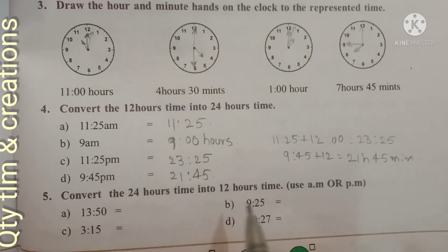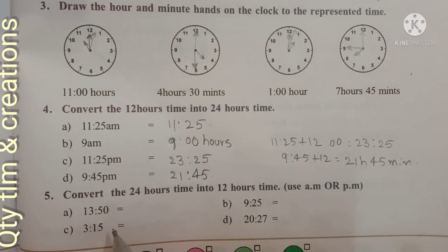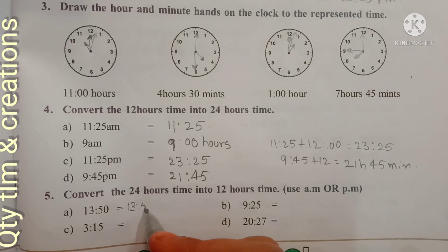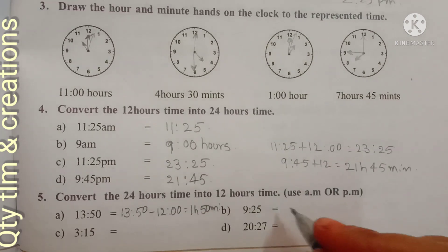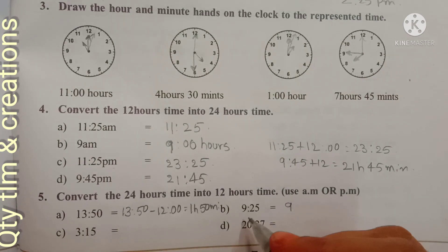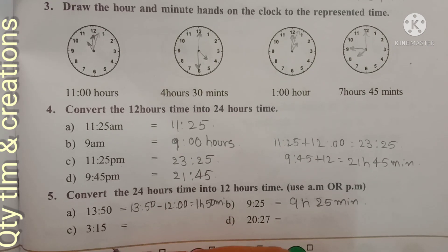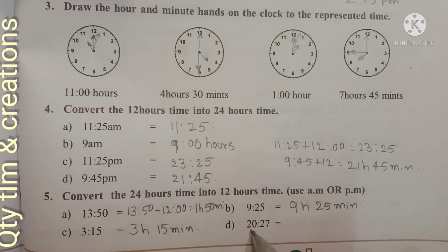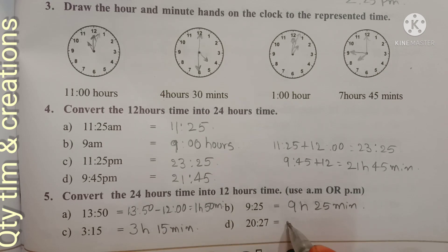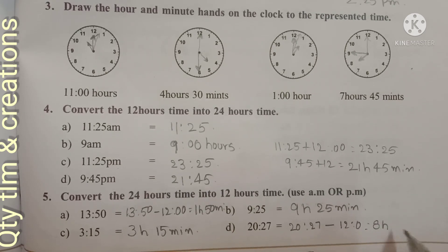Next: convert 24-hour time into 12-hour time. For 13:50, we subtract 12 hours since it is a PM value: 13:50 minus 12 equals 1 hour 50 minutes PM. For 9:25, this is not a PM value so we write it as-is: 9 hours 25 minutes. For 3:15, similarly it stays as 3 hours 15 minutes. For 20:27, we subtract 12: 20 hours 27 minutes minus 12 equals 8 hours 27 minutes PM.